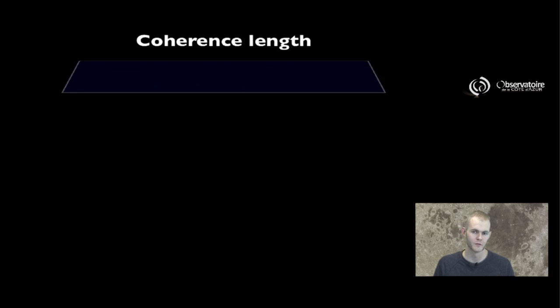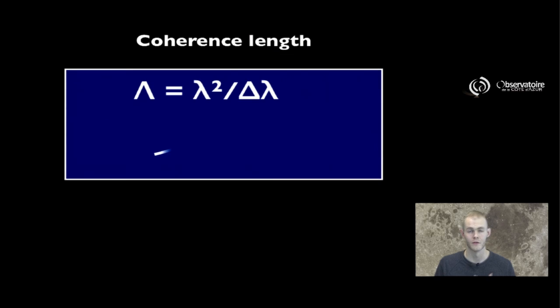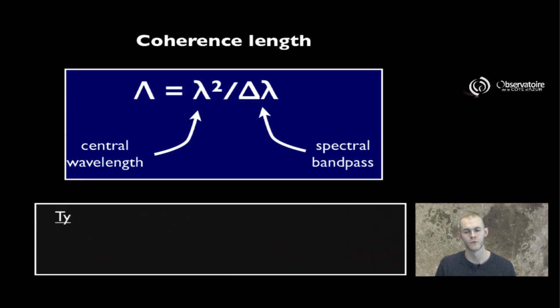We've already seen the expression for the coherence length, but it's important enough that it needs to be repeated here. The value for the characteristic size of the packet we've just isolated earlier happens to be the value of the central wavelength squared divided by the bandpass.